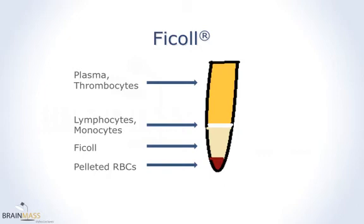Any remaining red blood cells are pelleted to the bottom of the tube. The Ficoll sits on top of the red blood cells. The peripheral blood mononuclear cells, or PBMCs — the fraction containing lymphocytes — are then layered on top of the Ficoll and can be removed from the tube.